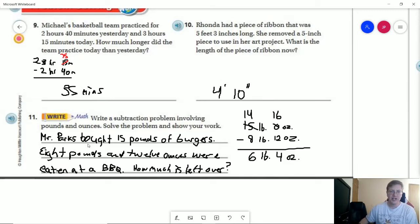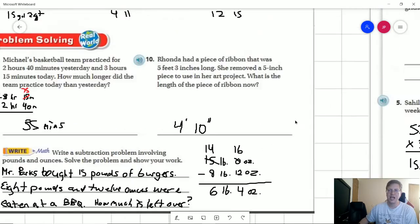So for number 11, I said that I bought 15 pounds worth of burgers. Me and my guests ate 8 pounds and 12 ounces at a barbecue, how much is left over. And so I chose this because it would be easier. So I have 16 ounces and a pound. So I take away a pound here, send 16 ounces over here and do my subtraction.